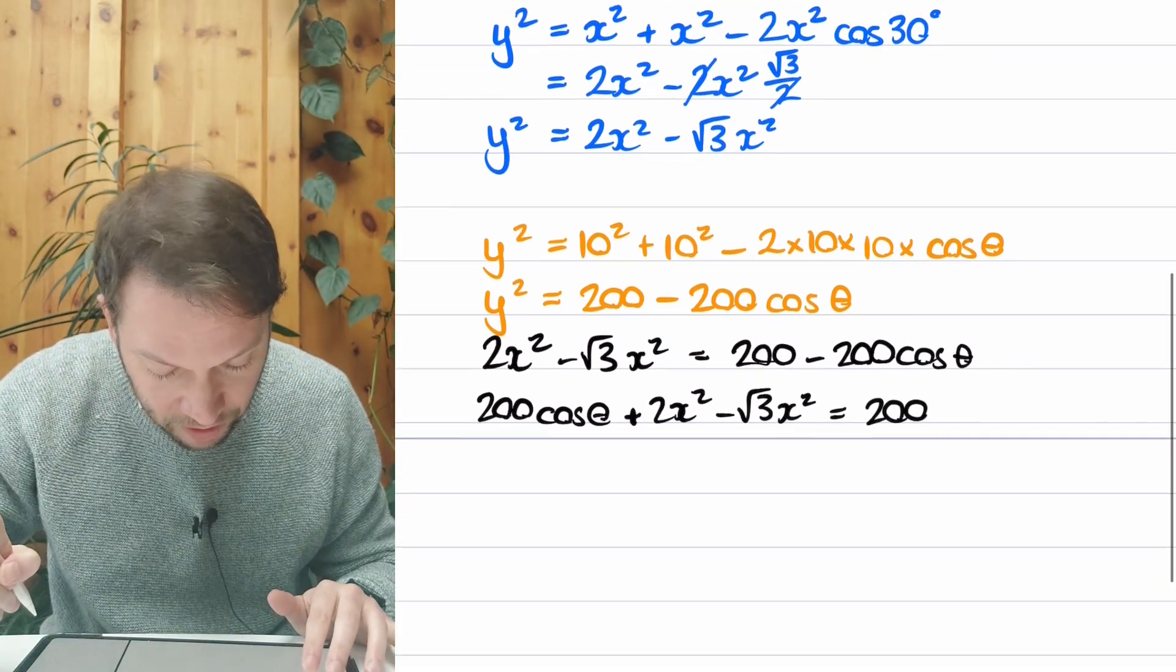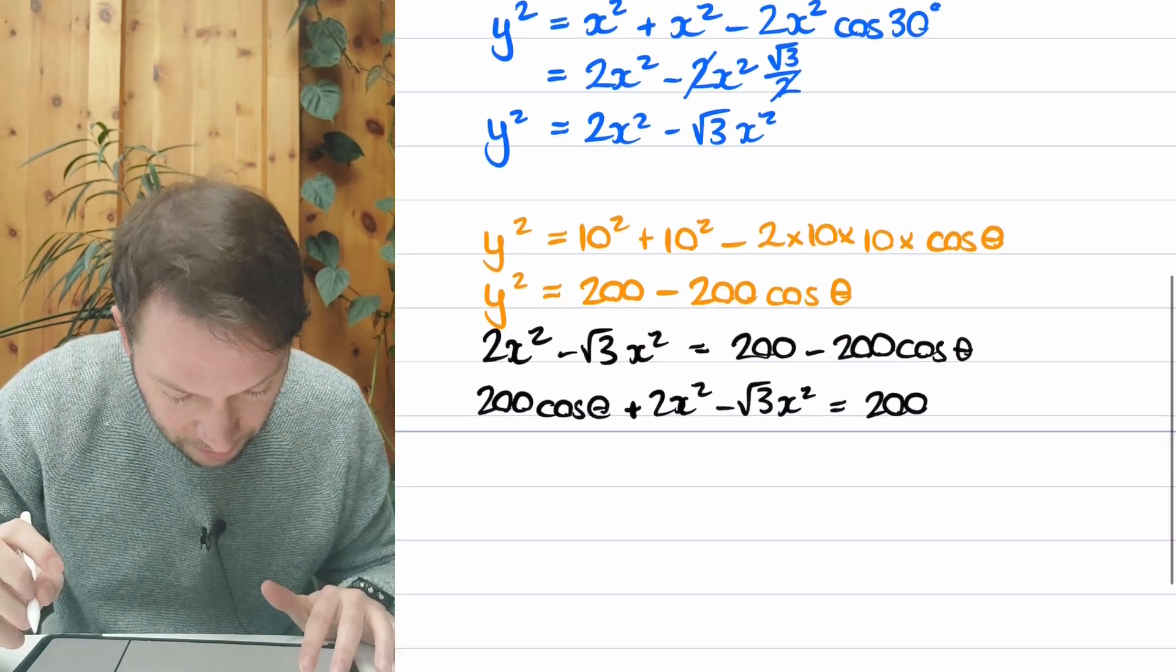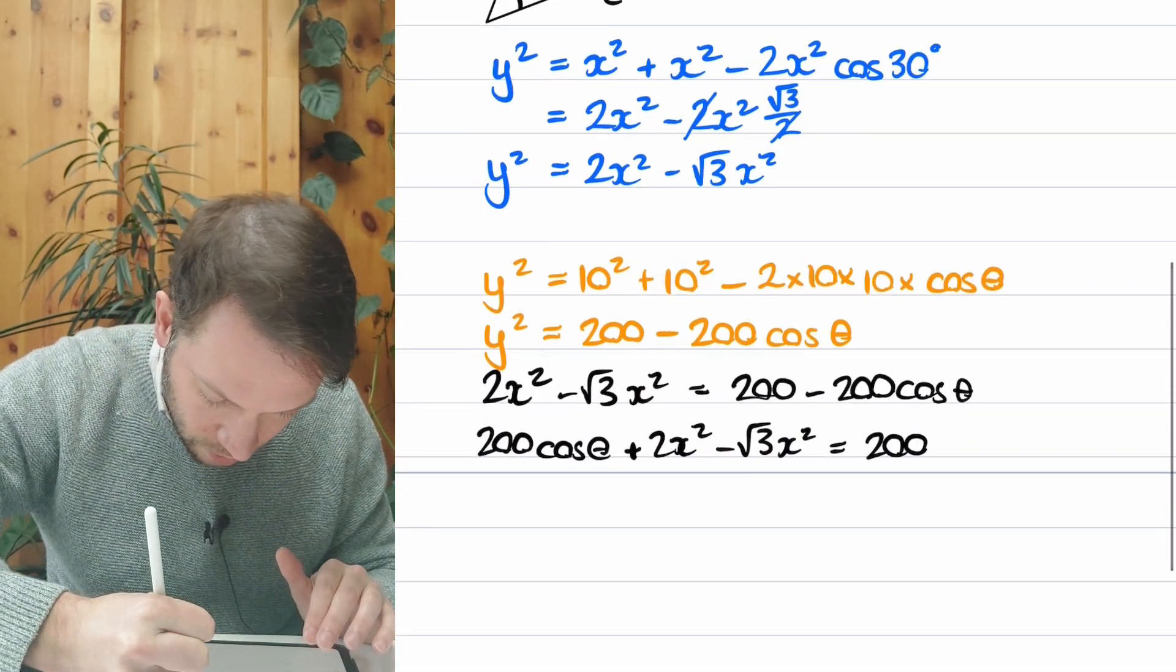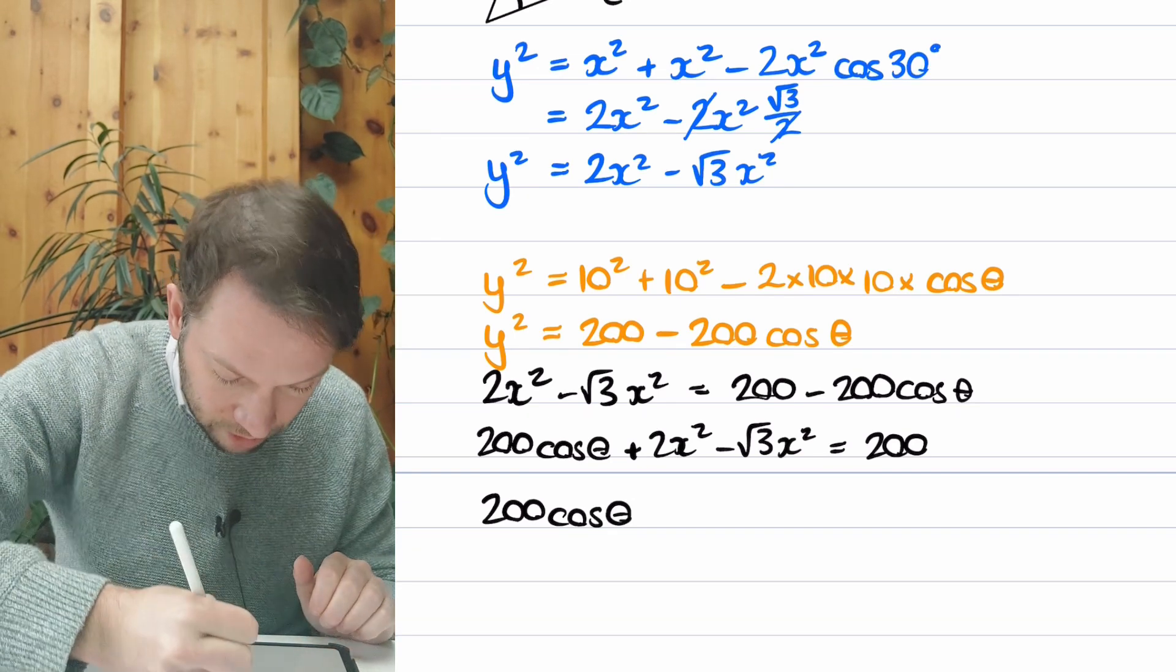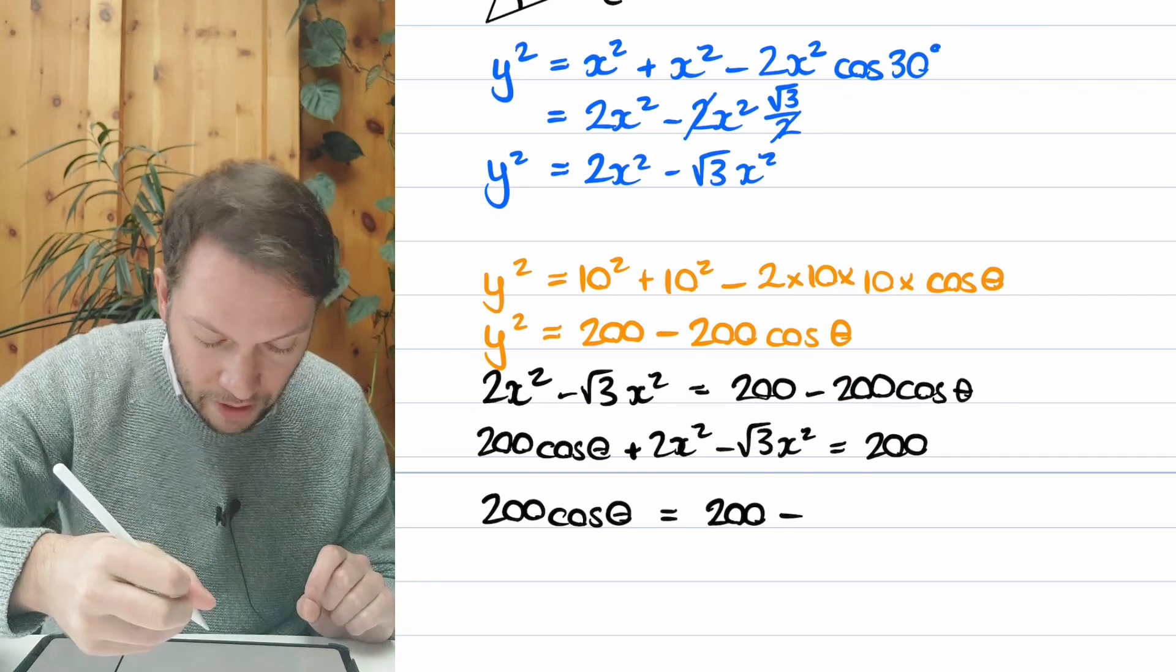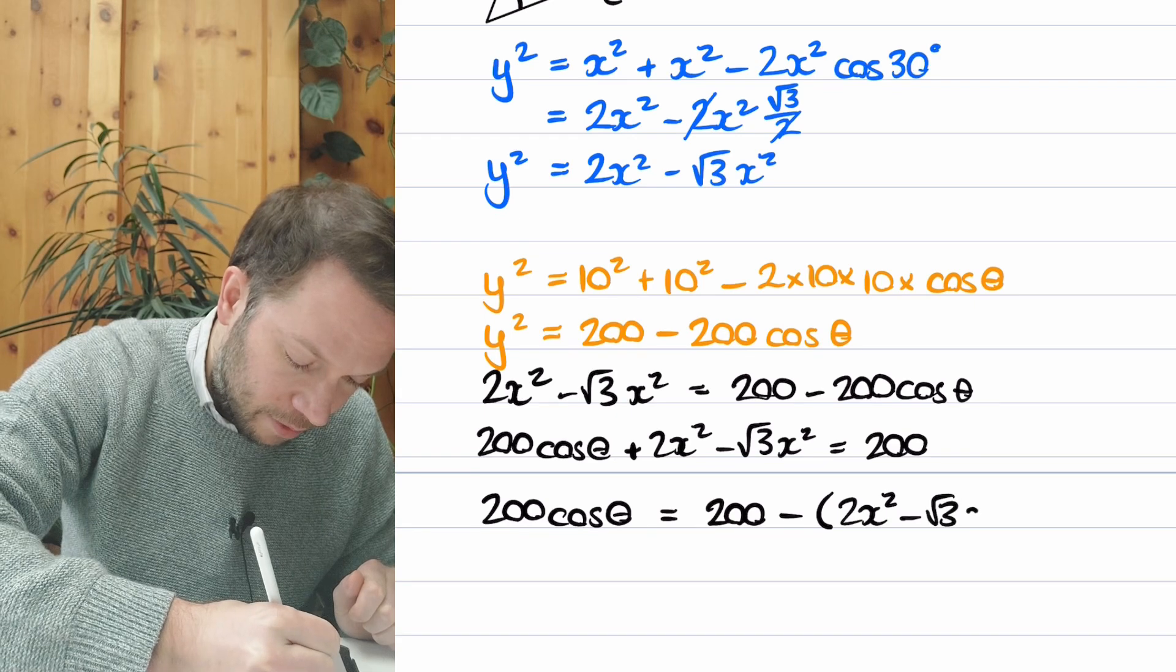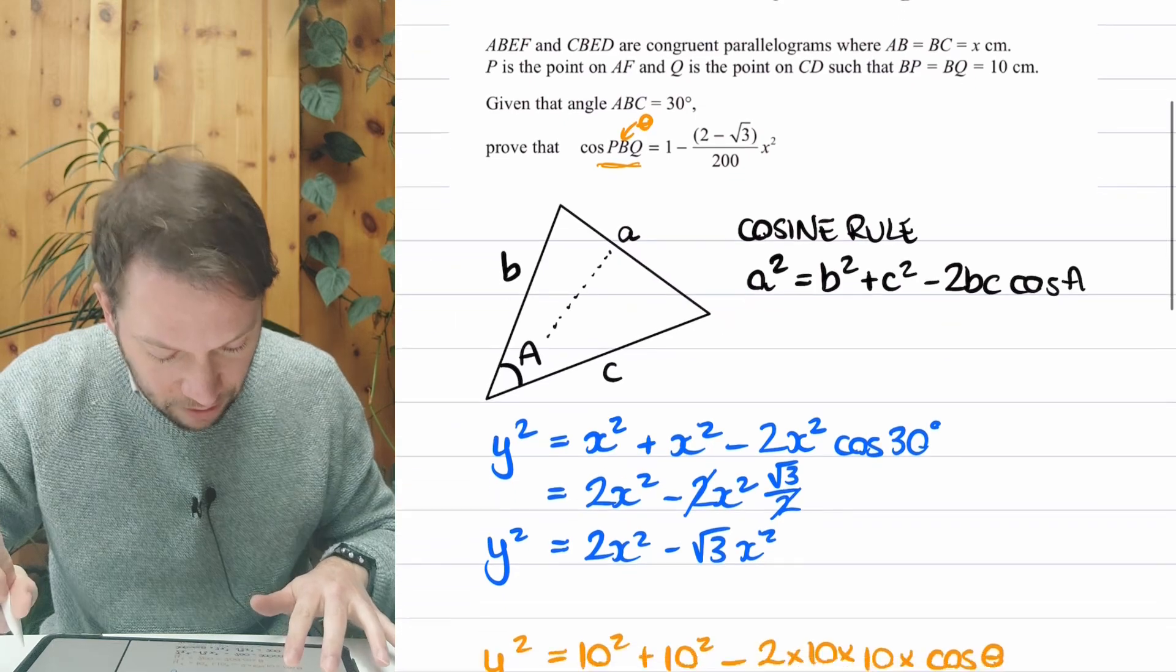And then we're still trying to get the cos of theta on its own. So I want to get rid of these other terms here. So what can we do? We can do 200 cos theta, and we're going to subtract these other terms around it. Now I'm going to do 200 minus, and then we can subtract all of this, plus the 2X squared minus root 3X squared, like that.